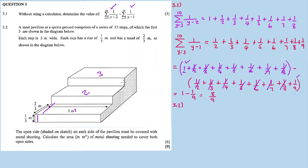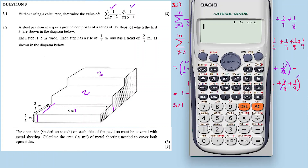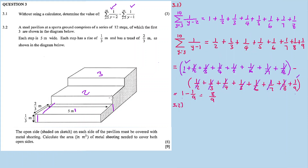We need to calculate the area for one side, then multiply by 2 for both open sides. We calculate the area for the first step — it's a rectangle. So area equals rise times tread: 1 over 3 times 2 over 3, which equals 2 over 9. So the area for the first step is 2 over 9 metres squared.